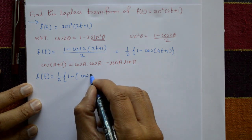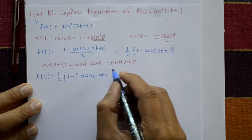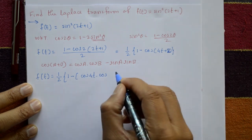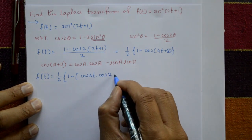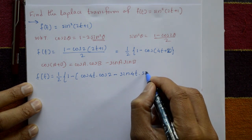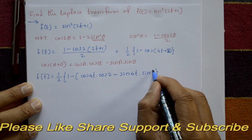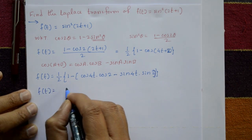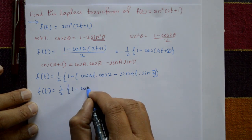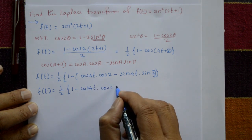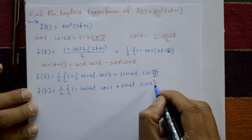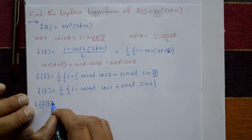Here A = 4t and B = 2. So cos(4t + 2) = cos(4t)·cos(2) - sin(4t)·sin(2). Opening the bracket: f(t) = (1/2)[1 - cos(4t)·cos(2) + sin(4t)·sin(2)]. Now we apply the Laplace transform to both sides.